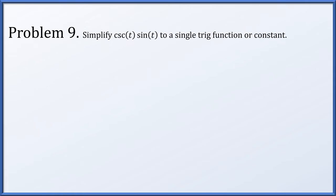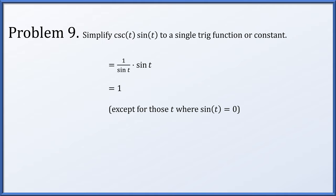In problem 9, we're going to simplify cosecant(t) times sine(t) to a single trigonometric function or constant. Well, the cosecant of t is 1 over sine(t), so 1/sin(t) times sin(t) is just equal to 1. We do want to be a little careful: if sine of t is equal to 0, then cosecant(t) doesn't even exist, so we wouldn't say that cosecant(t) times sine(t) equals 1 for those values. But implicitly we're not considering those values because we wrote down cosecant(t) to begin with.